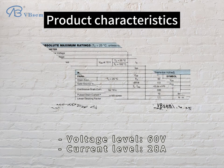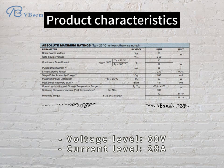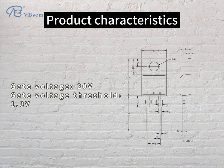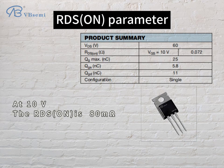Product characteristics: Voltage Level 60V, Current Level 28A, Gate Voltage 20V, Gate Voltage Threshold 1.8V. At VGS=10V, RDS-ON is 80mΩ.